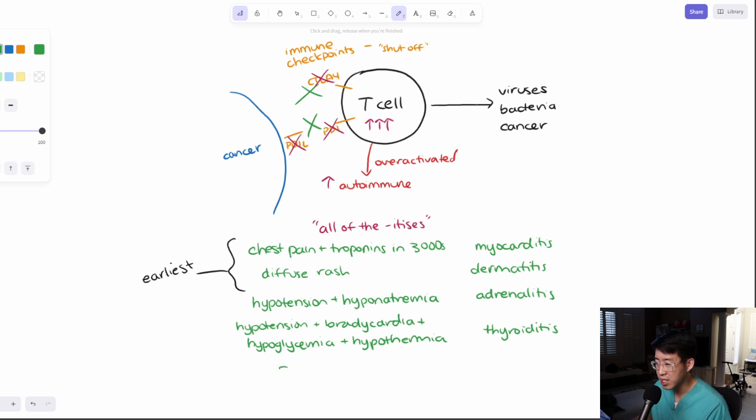A very common one that you see is shortness of breath. And that would be pneumonitis. Diffuse watery diarrhea, something like greater than 10 bowel movements a day. This is also a very common one. So greater than 10 bowel movements a day. Then you should think about colitis.